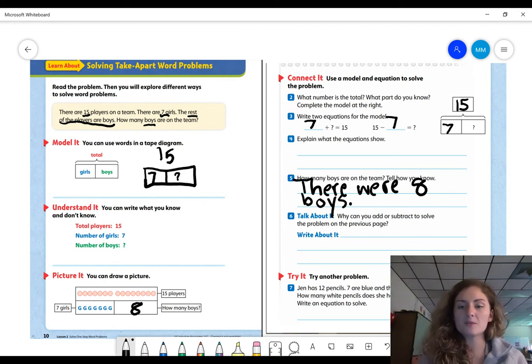So now we're going to go to number six. It says, why can you add or subtract to solve the problem on the previous page? Why can we do that? Why should we do that? What do you think? It's one of those problems that we could really add to find what our missing part is to make our whole, or we can take our whole and break it into parts.